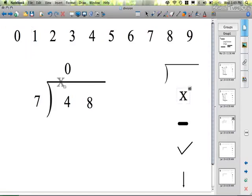Step 2 is to multiply 0 times 7. The answer is 0. So we're going to subtract 4 minus 0, and we're going to be left with our 4. And we check. I have 4 $10 bills and 7 people. Can they each have another one? No. So I'm going to bring down my 8.